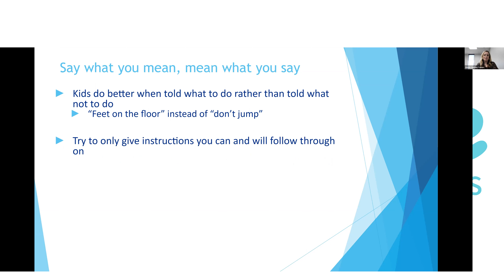The next point is say what you mean and mean what you say. The biggest tip is to tell kids what they should be doing, not what they shouldn't. Instead of 'don't jump on the couch,' say 'feet on the floor.' If they're being aggressive, say 'we keep our hands to ourselves.' Give instructions they can follow, setting the expectation of what you want to see versus what you don't. This helps them know what's expected and what they can do instead.